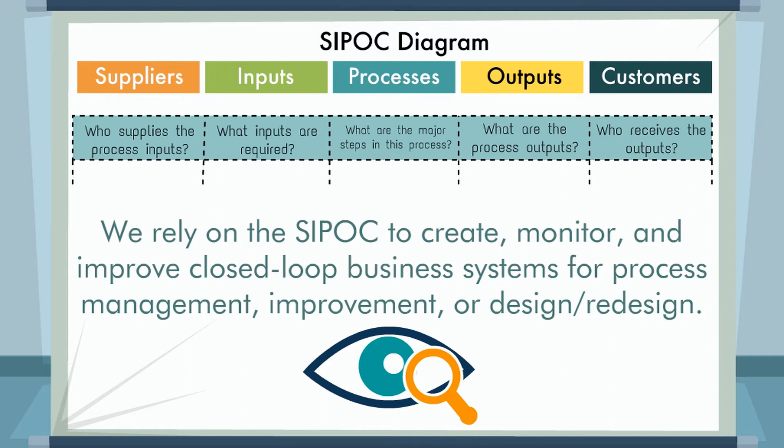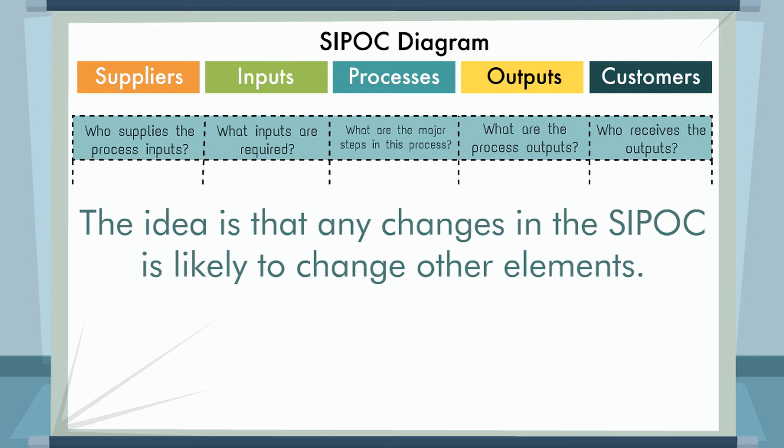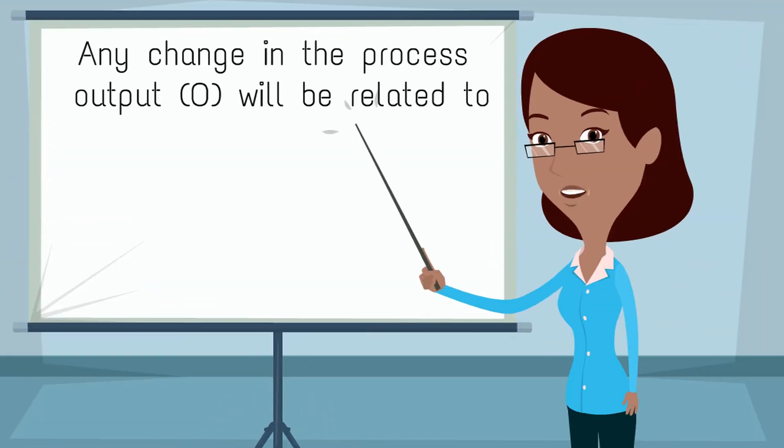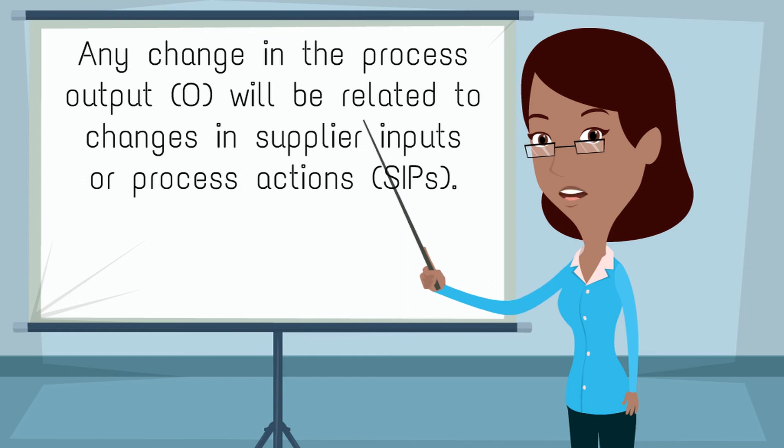The idea is that any changes in the SIPOC is likely to change other elements. Any change in the process output, O, will be related to changes in Supplier Inputs or Process Actions.